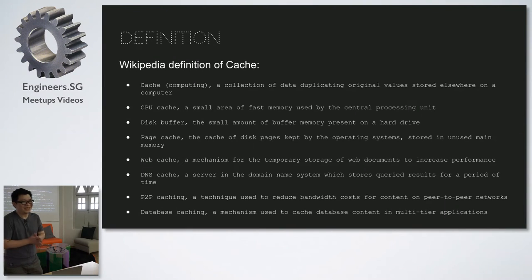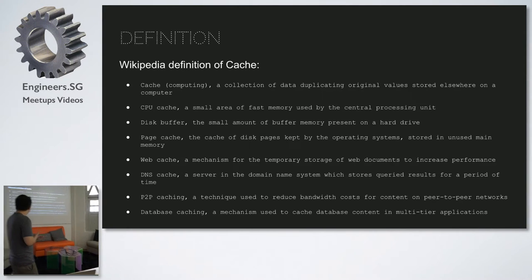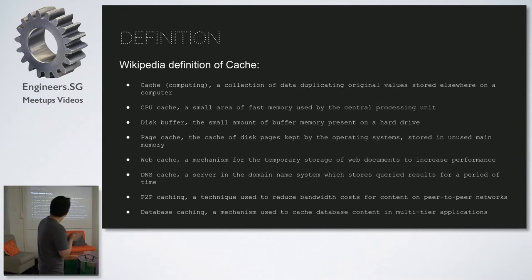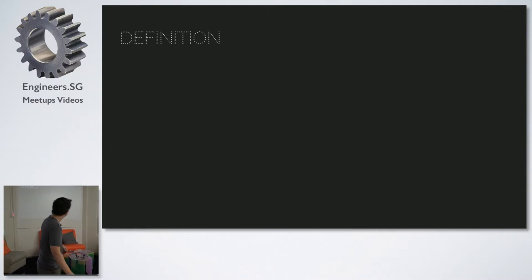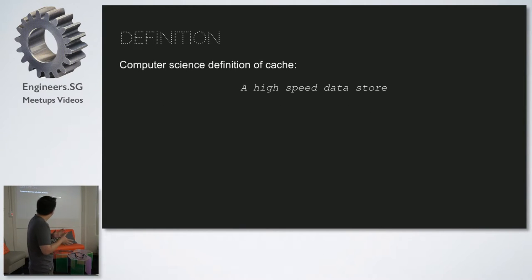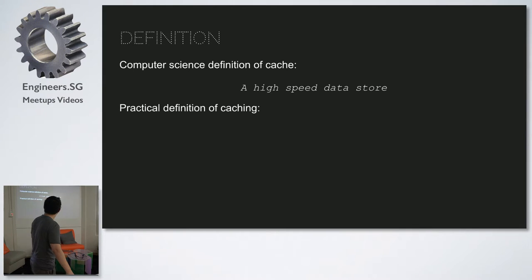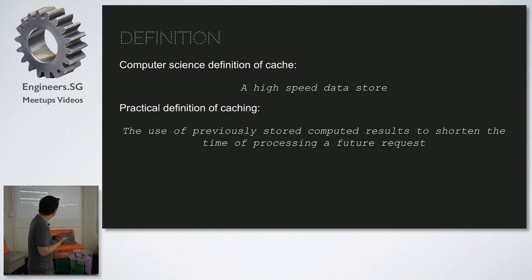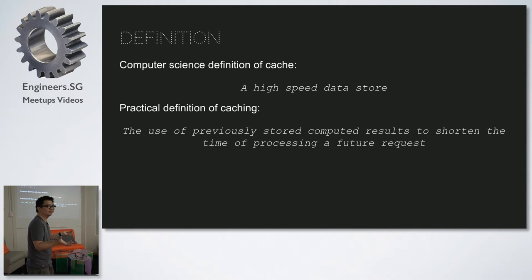Wikipedia has a definition — there's page cache, web cache, DNS cache, database caching. More of a computer science definition: a cache is basically just a high-speed data store. But the practical definition would be the use of previously stored computed results to shorten the time of processing a future request — that's basically the purpose of caching.